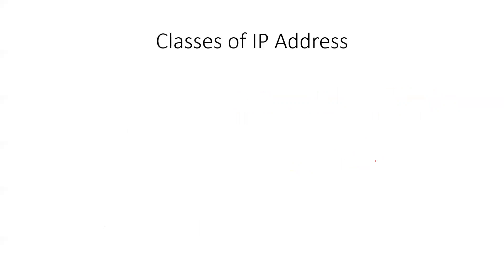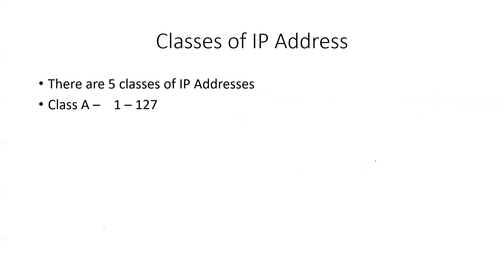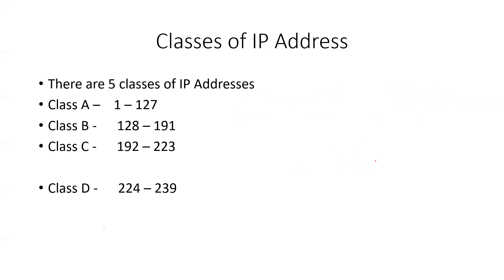The next thing we're going to look at is the classes of IPv4 addresses. We have five main types of IPv4 addresses: we have Class A, we have Class B, we have Class C, we have Class D, and we have Class E. What makes up a Class A address? What makes up a Class B address? What makes up a Class C? What makes up a Class D? What makes up a Class E?